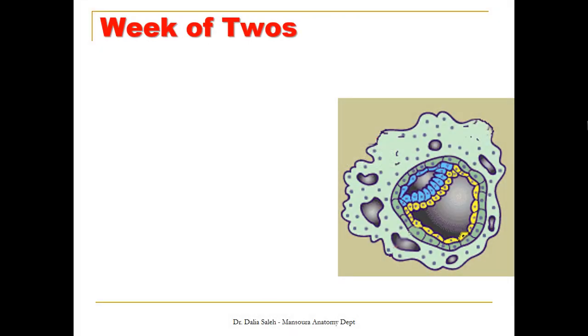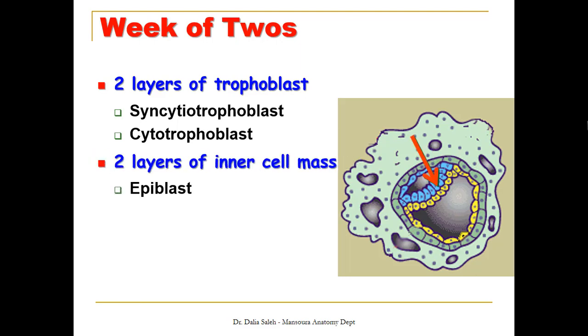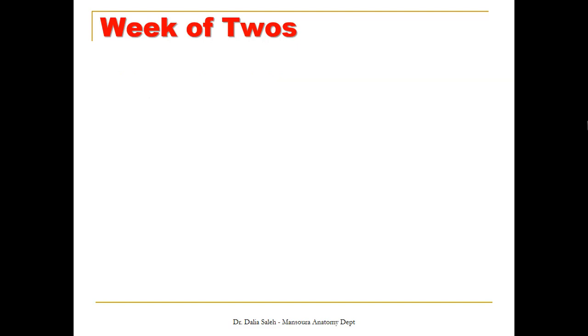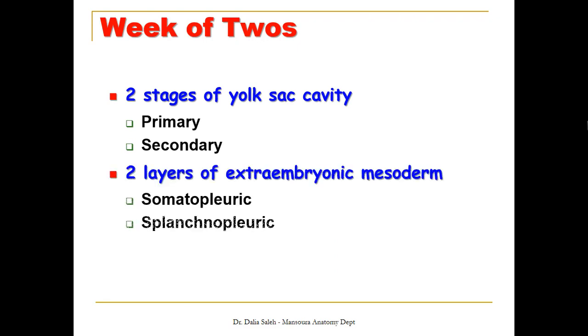To summarize the events that take place at the second week of development, we call it the week of twos. The trophoblast differentiates into two layers: outer syncytiotrophoblast and inner cytotrophoblast. The inner cell mass differentiates into two layers: epiblast and hypoblast. Two cavities appear: the dorsal amniotic cavity and the ventral yolk sac cavity. There are two stages of yolk sac development: primary and secondary. And finally, there are two layers of extra-embryonic mesoderm: the somatopleuric layer and the splanchnopleuric layer. This is the end of the presentation.